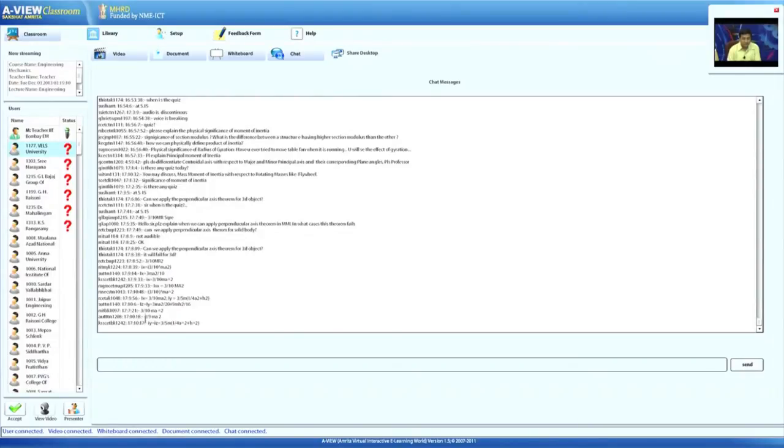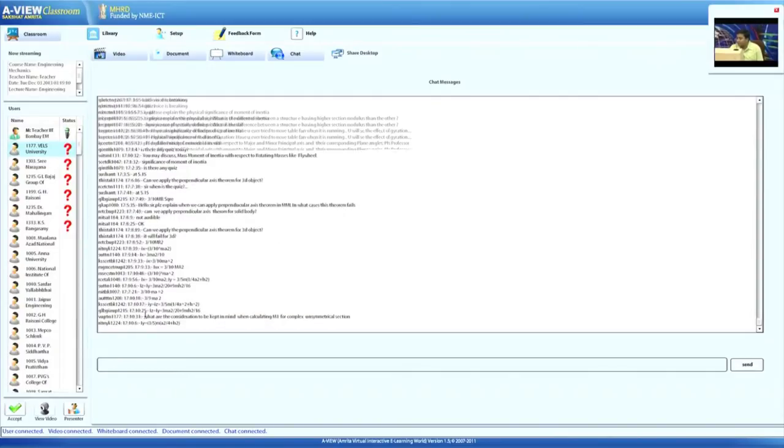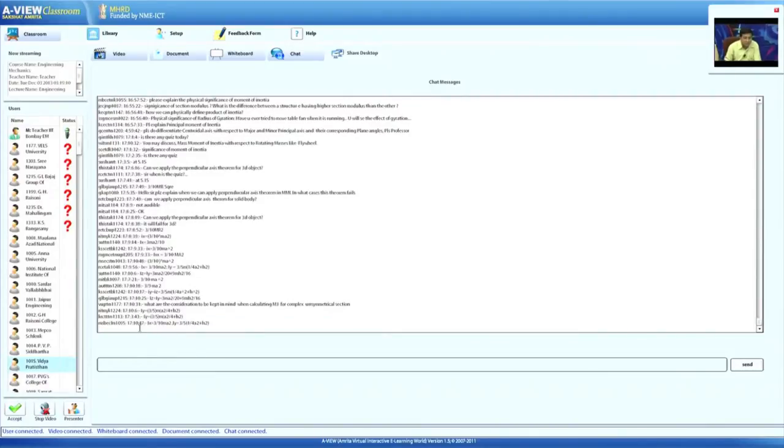So answer is 3 over 10 m a square. How about the Iy and Iz? First of all, Iy should be equal to Iz, that is one thing. I think 1, 2, 2, 4. Yeah, some of you are giving...